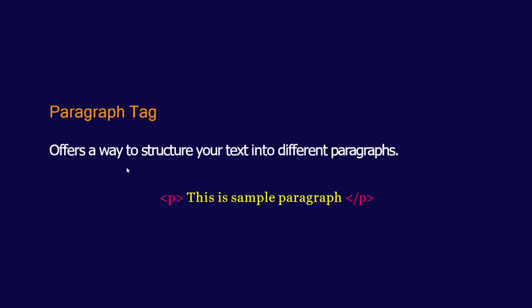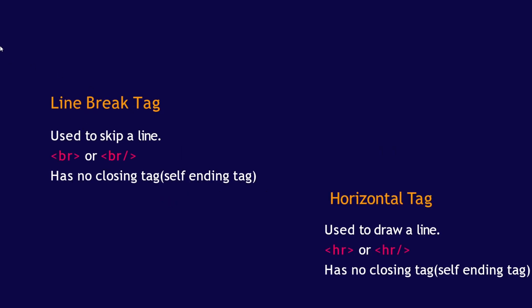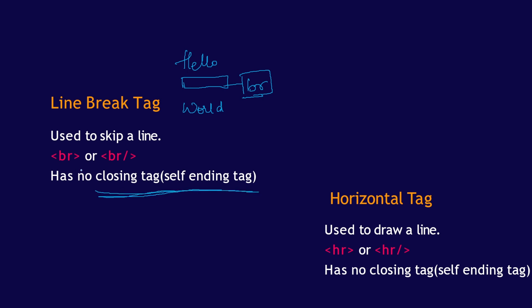The paragraph tag offers a way to structure your text into different paragraphs, and it can be used multiple times in your program. Next, we have the line break tag and the horizontal tag. The line break tag is used to skip a line from a previous line. For example, if you have hello and want to skip a line and then print world, you can use a BR tag. This BR tag is a self-ending tag, meaning it does not have any closing tag — it is both the opening and closing tag.